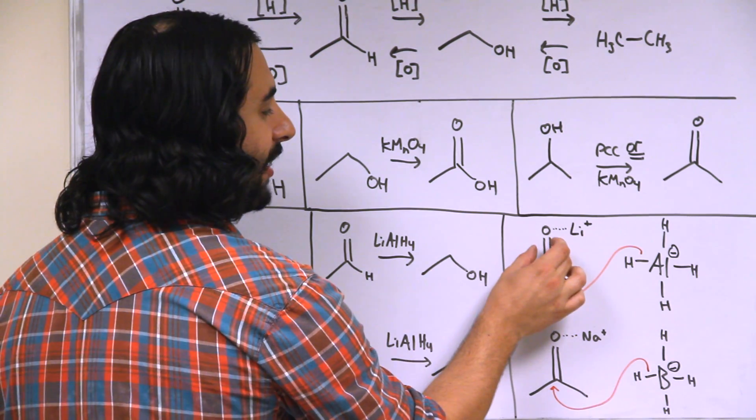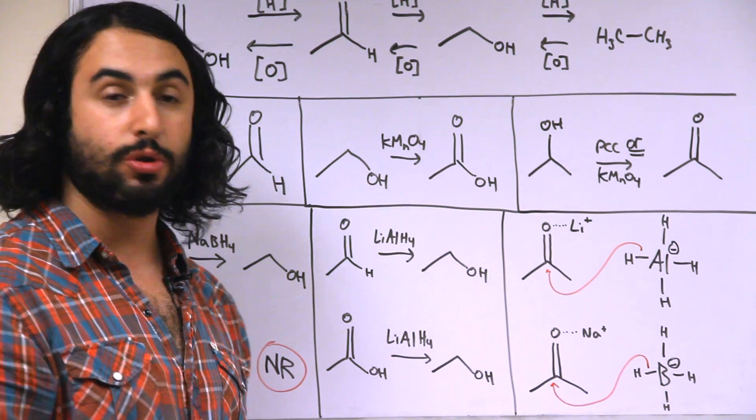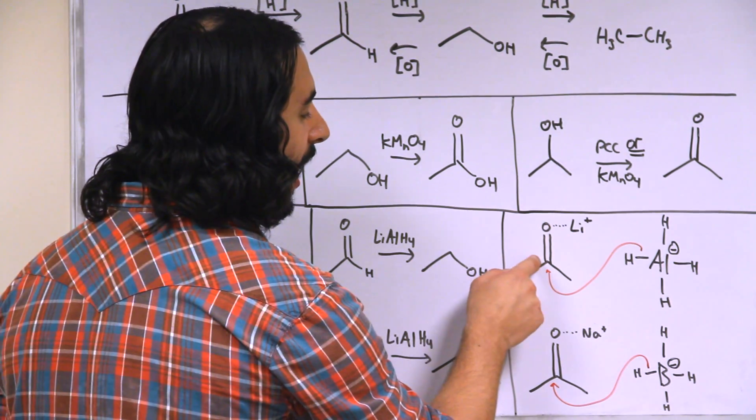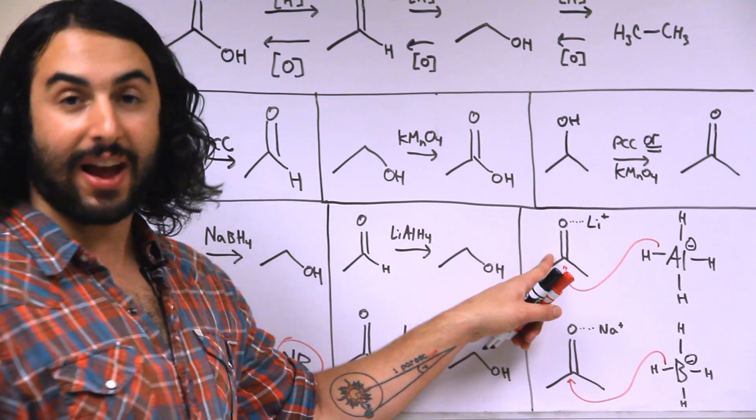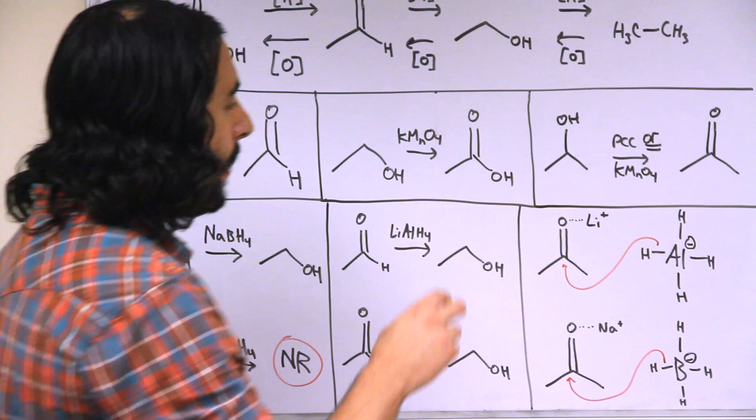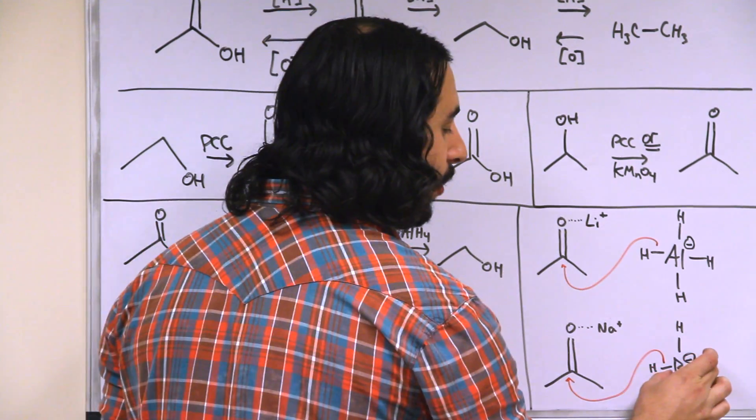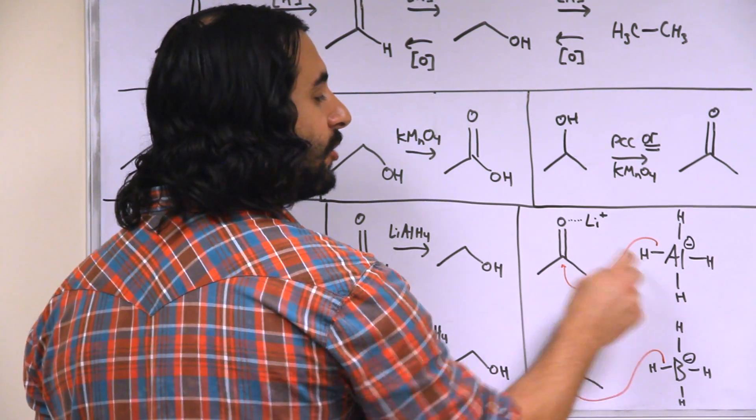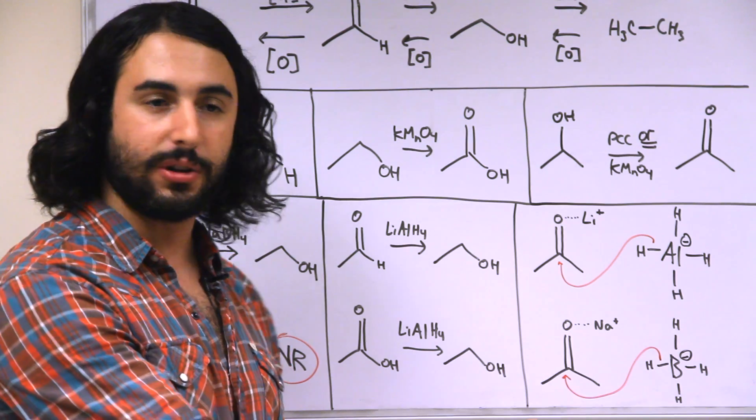So a lot of this electron density in response is going to skew even further towards the oxygen in an attempt to neutralize. So that creates a heightened partial positivity on that carbon atom. So that's part one. Part two is that because aluminum is less electronegative than boron, that means that it is holding onto these hydrides less tightly so they're even more available for nucleophilic attack.